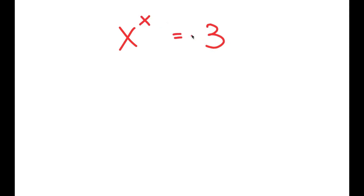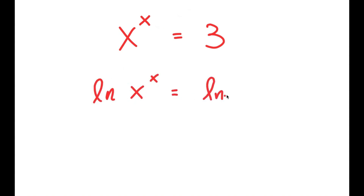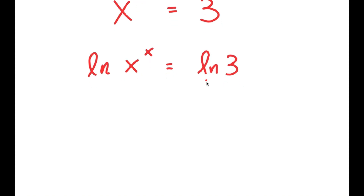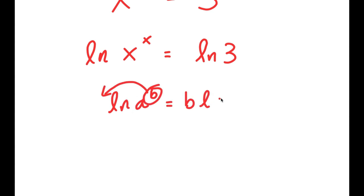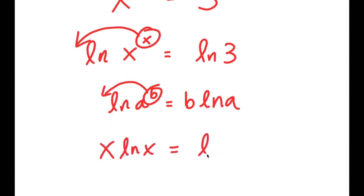In this video I'm going to solve the equation x to the power of x is equal to 3. To solve this, I'll start by taking the natural log on both sides, so I get ln of x to the power of x equals ln of 3. Using the logarithm property, I can move the exponent x to the front: x times ln x equals ln 3.